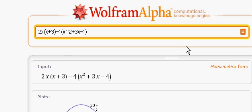Here is the equation, 2x times x plus 3 minus 4 times x squared plus 3x minus 4 right here.